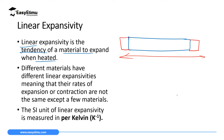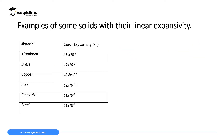The SI unit of linear expansivity is per kelvin — meaning per unit of thermodynamic temperature. We measure how much a material expands per one kelvin rise in temperature. Different materials have different linear expansivity values, expressed in per kelvin.